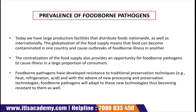Today we have very large production facilities that distribute food nationwide and internationally. Different foods are exported and imported across the globe — for example, India is the largest producer of meat products, and it is exported across the world. The globalization of the food supply means food can become contaminated in one country and cause an outbreak of foodborne illness in another country.